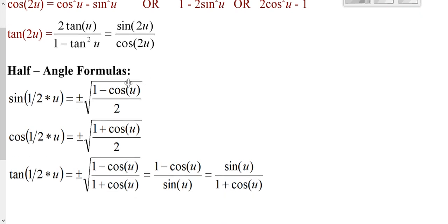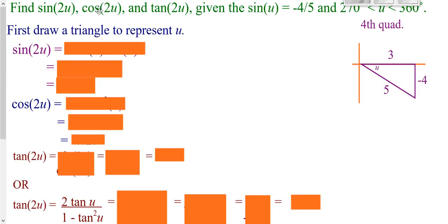If you have half angle formulas — half of something — here are your formulas. Tangent down here has three options you could use; it does not make a difference. So here we want to find the sine of 2u, cosine of 2u, and tangent of 2u when we're told that the sine is negative 4 over 5.